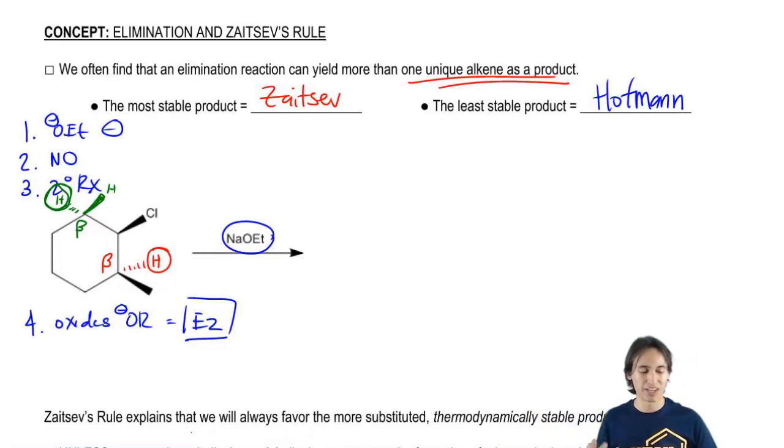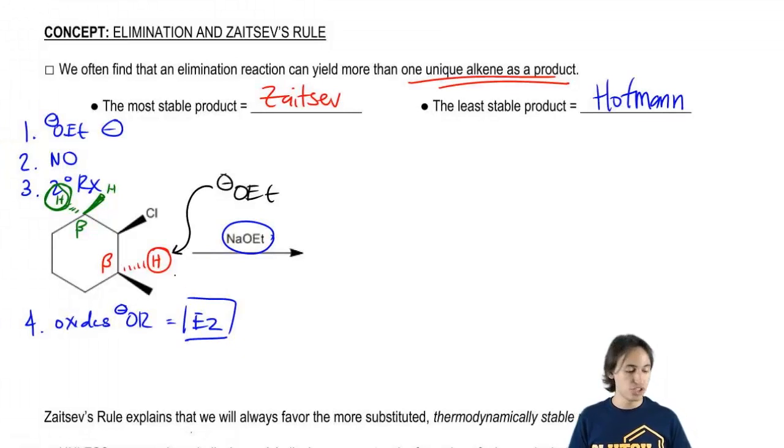Now that I know that, let's draw one of the mechanisms. We don't have to draw both. The mechanism would be three arrows just like it always is. Let's say I'm taking off the red H. Then I'm going to dump my electrons into the bond between the alpha and the beta, and then kick out my CL.